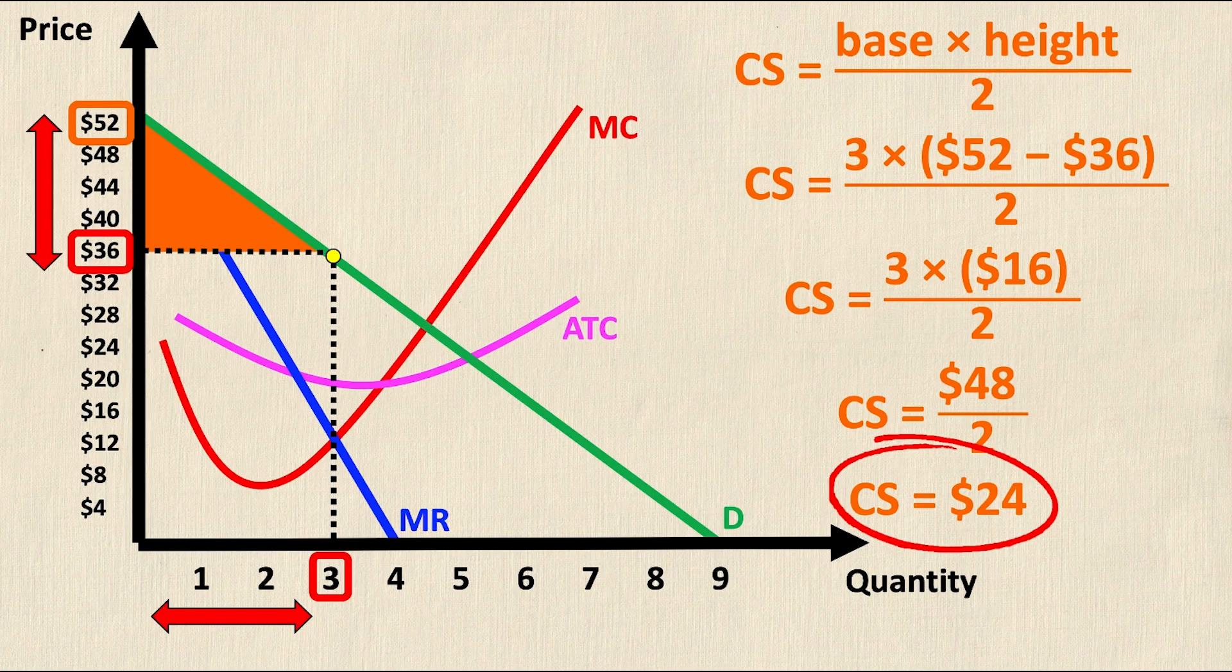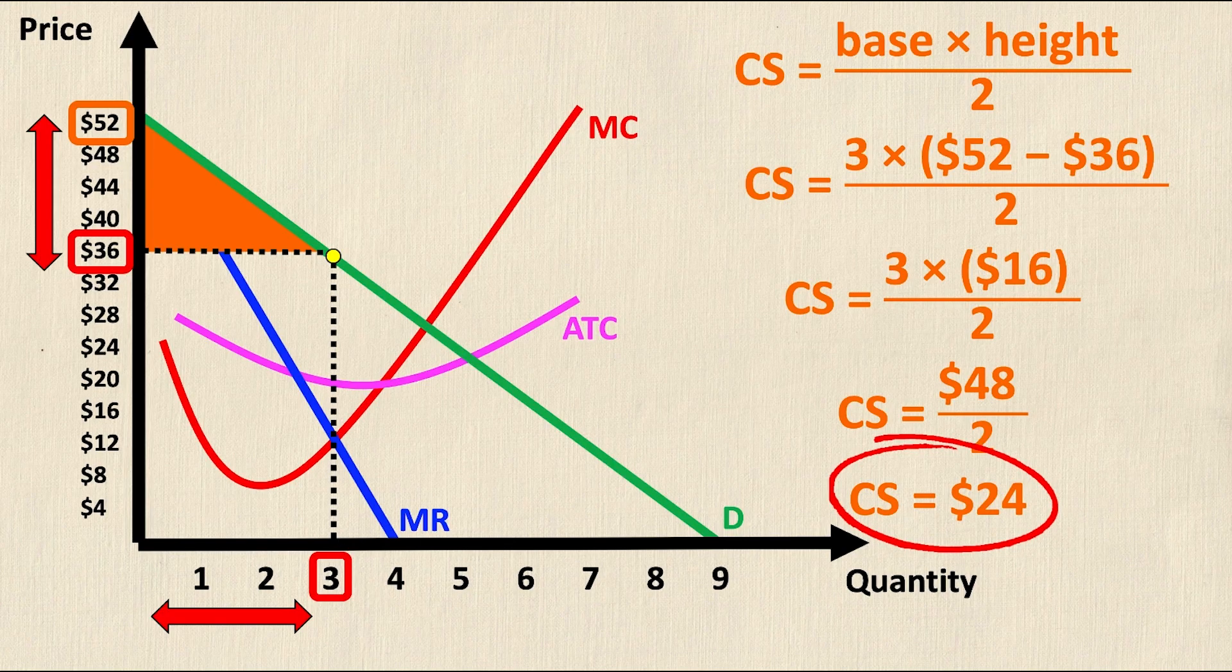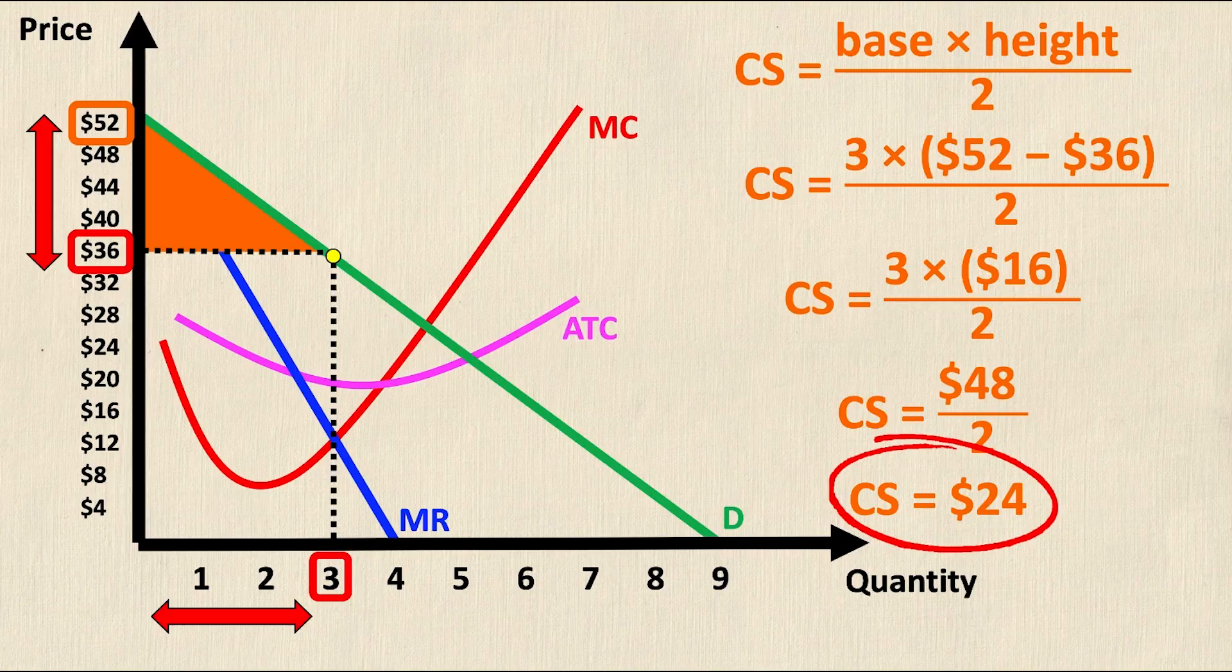Once again to recap, you take a look at the quantity where marginal revenue equals marginal cost, you follow it all the way up to the demand curve that dictates your selling price which in this case is $36, then you calculate the area below the demand curve and above the selling price. That triangle is your consumer surplus and the calculations for solving are in front of you right now.